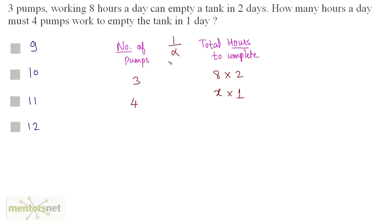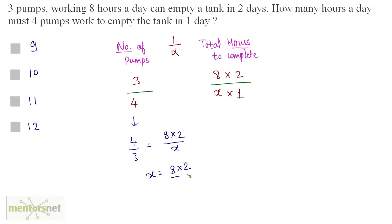This is again an inverse proportion because when you increase the number of pumps, the total time taken to empty the tank decreases. Taking the ratios and inverting, we get 4 by 3 equal to 8 times 2 by x. So x equals 8 times 2 by 4 times 3. Since 4 times 2 is 8, and 2 times 2 is 4 times 3 is 12, x equals 12. The total hours per day these pumps need to work is 12 hours — Option D.